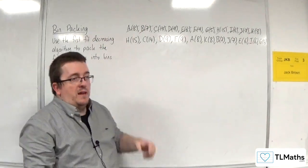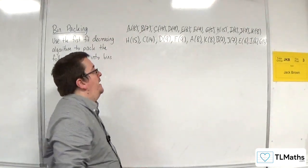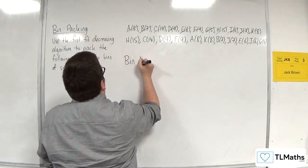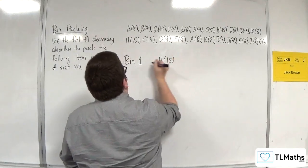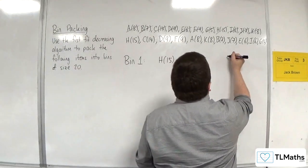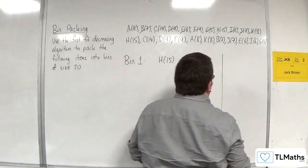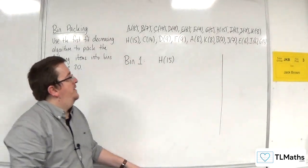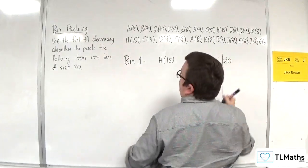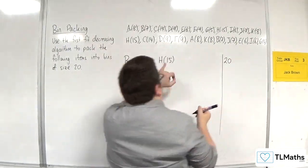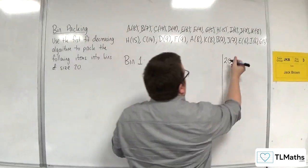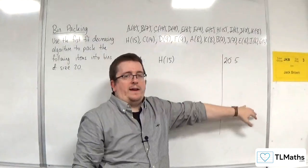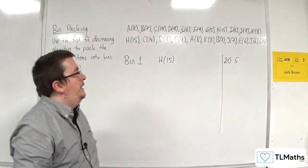The first item coming along is the largest, H15. So, bin 1, we're going to have H15. Now, over to the side, I'm just going to draw a line so that it's clear that these values aren't being considered. I've gone from a size of 20, but now H15 has been put in it. So, now that's down to 5. So, this allows me to just track how much space I've got left in each bin.